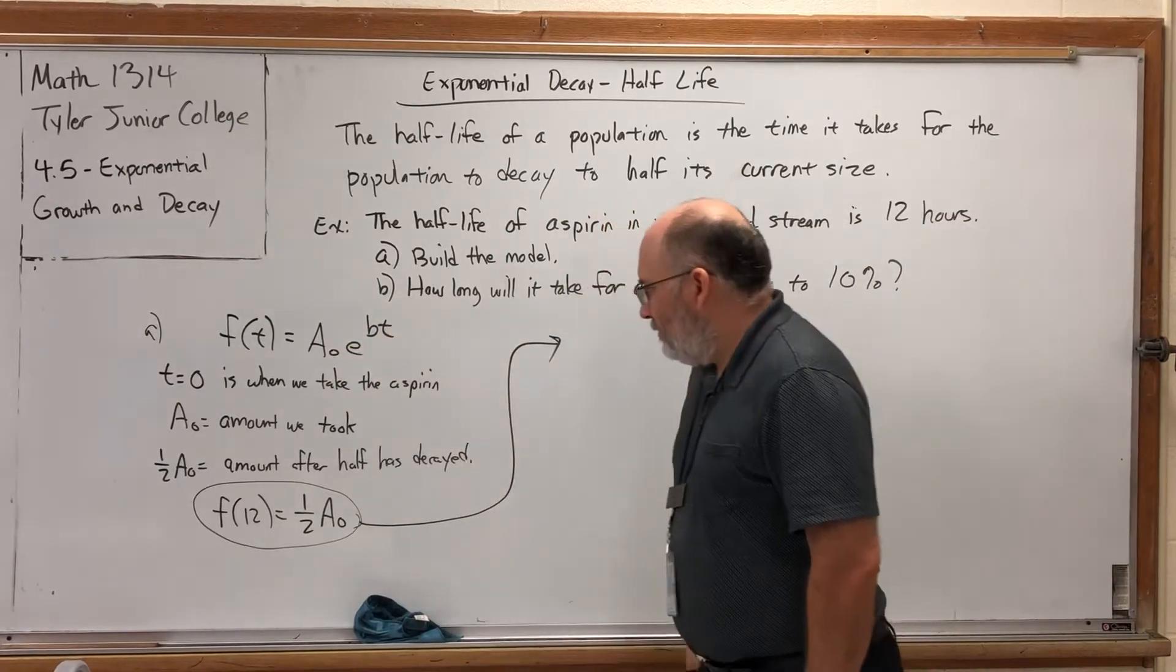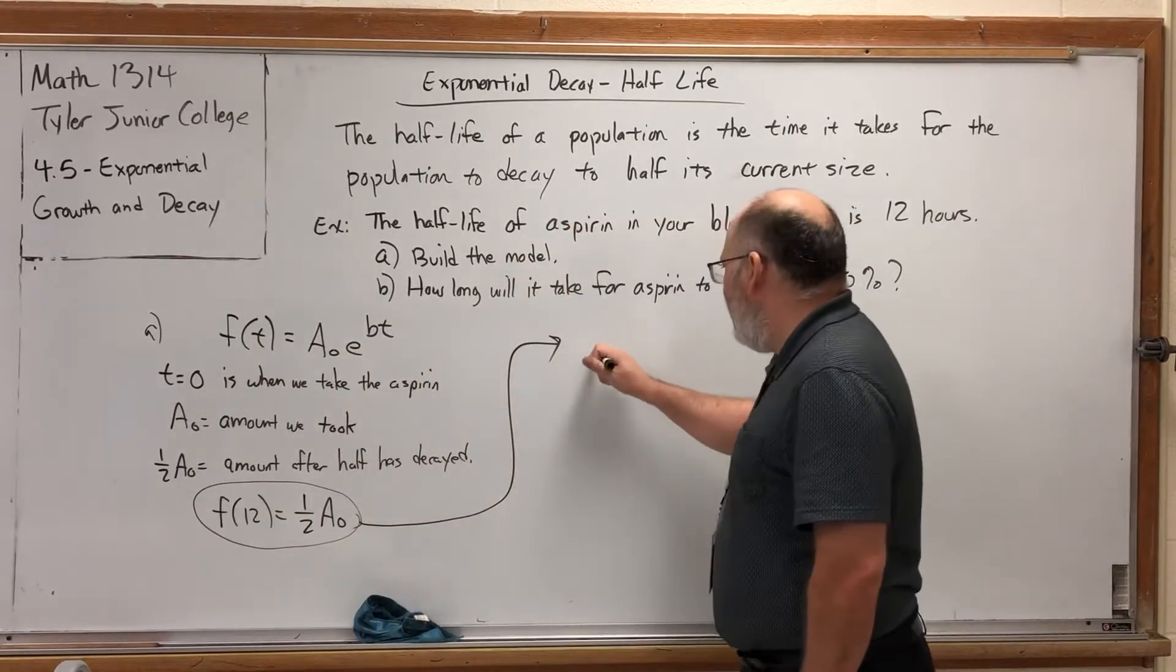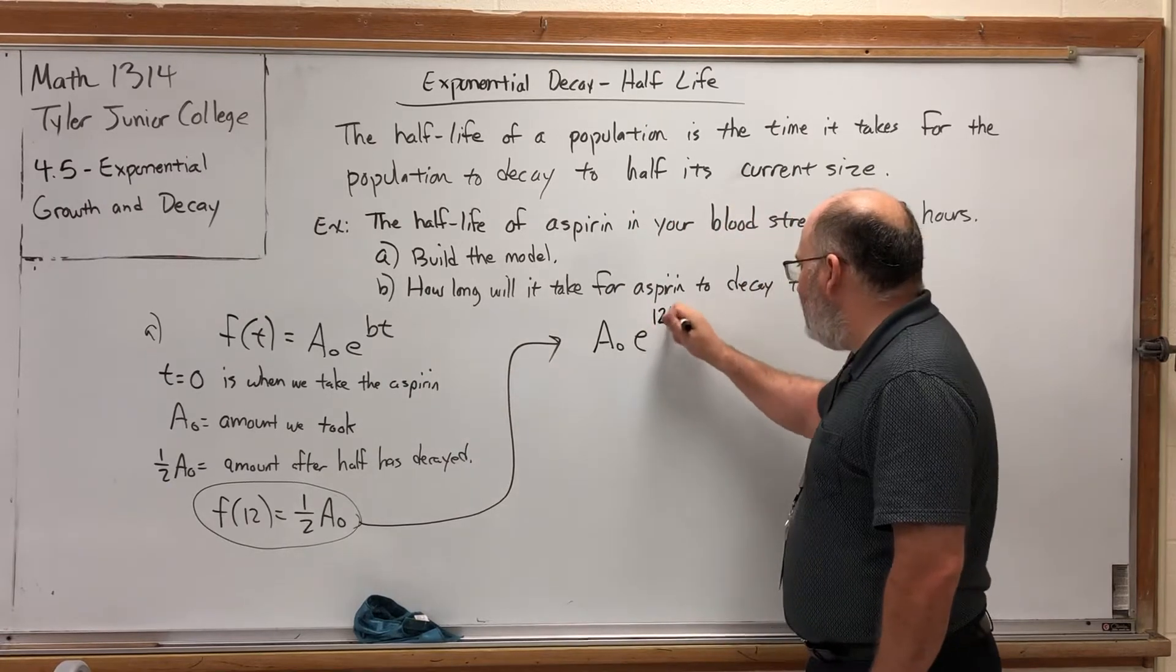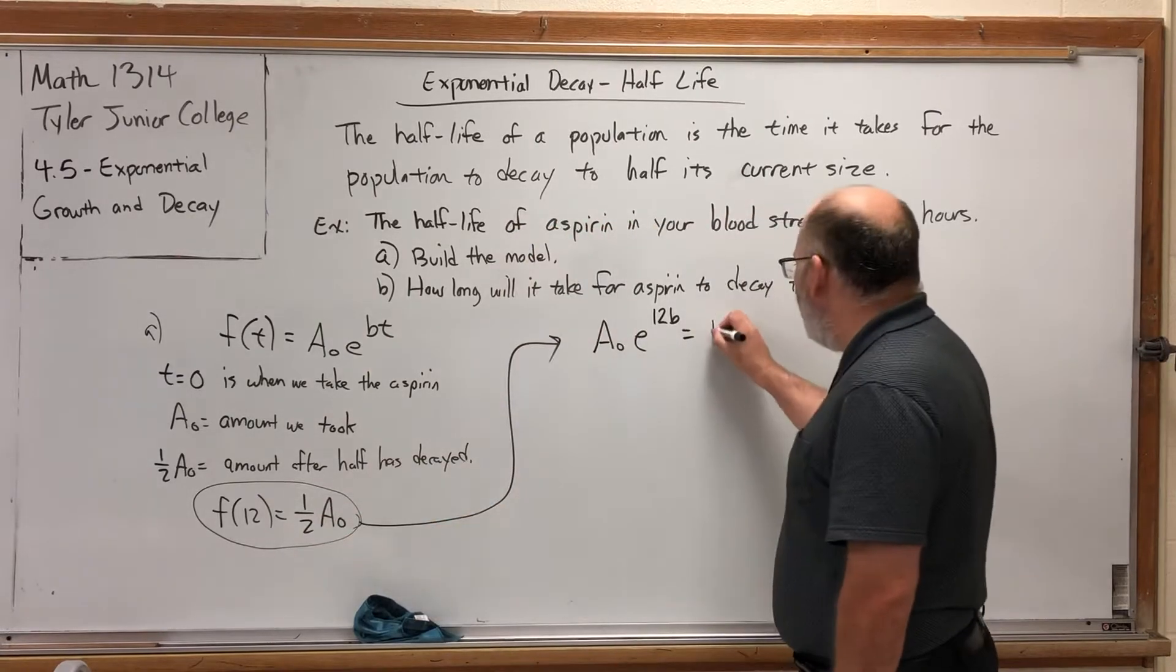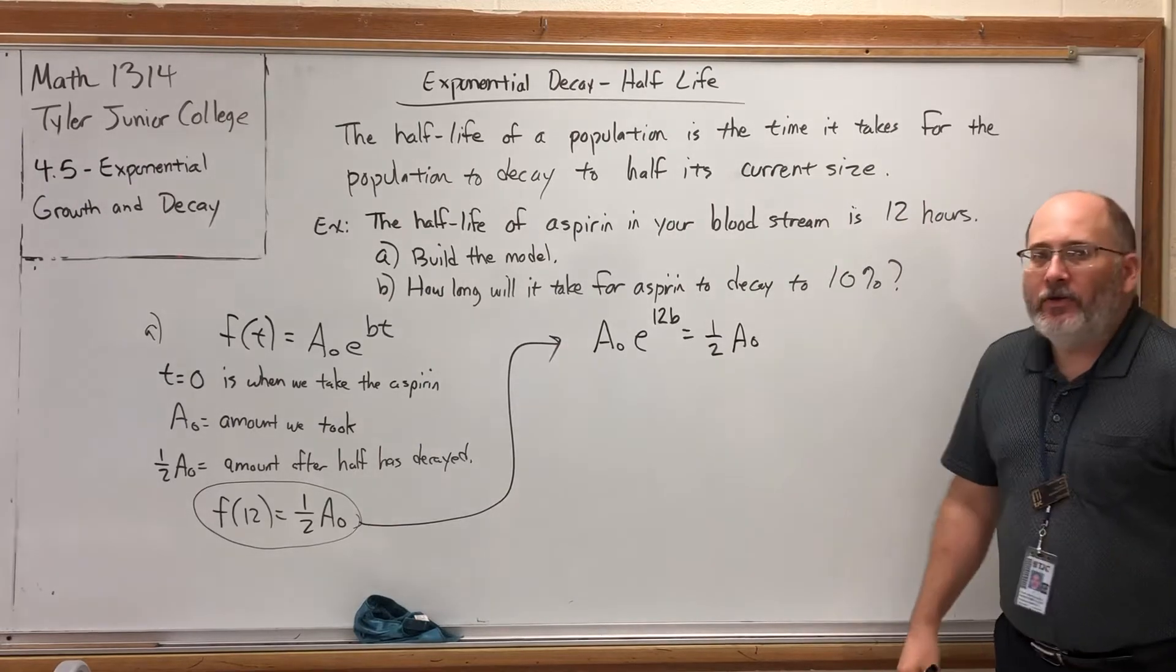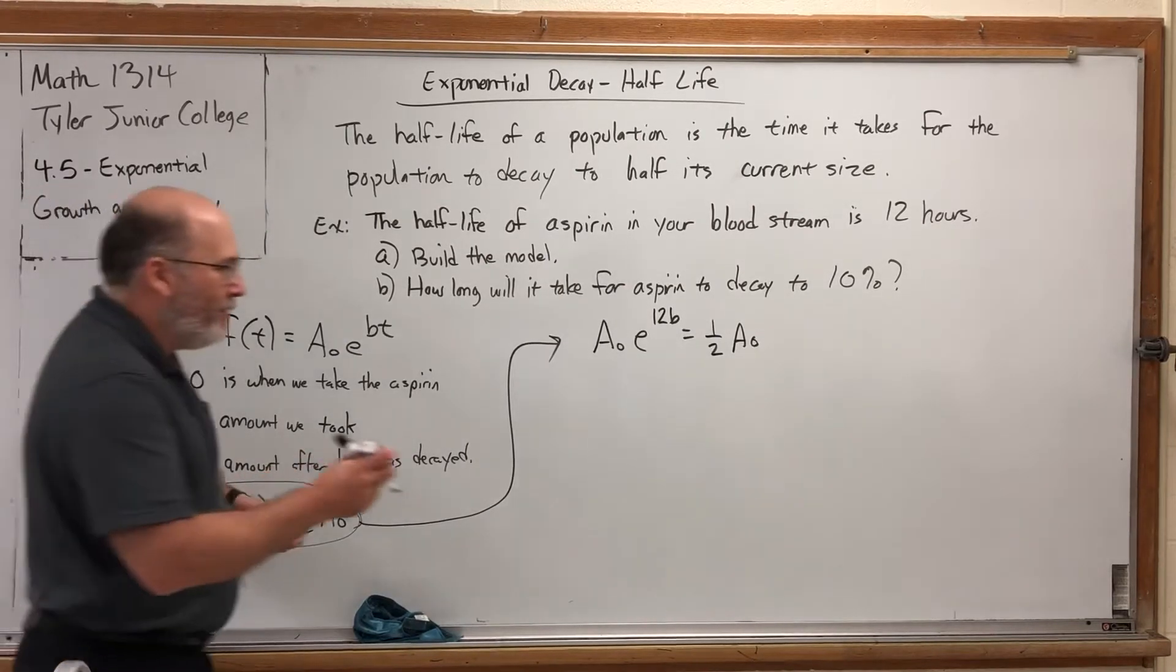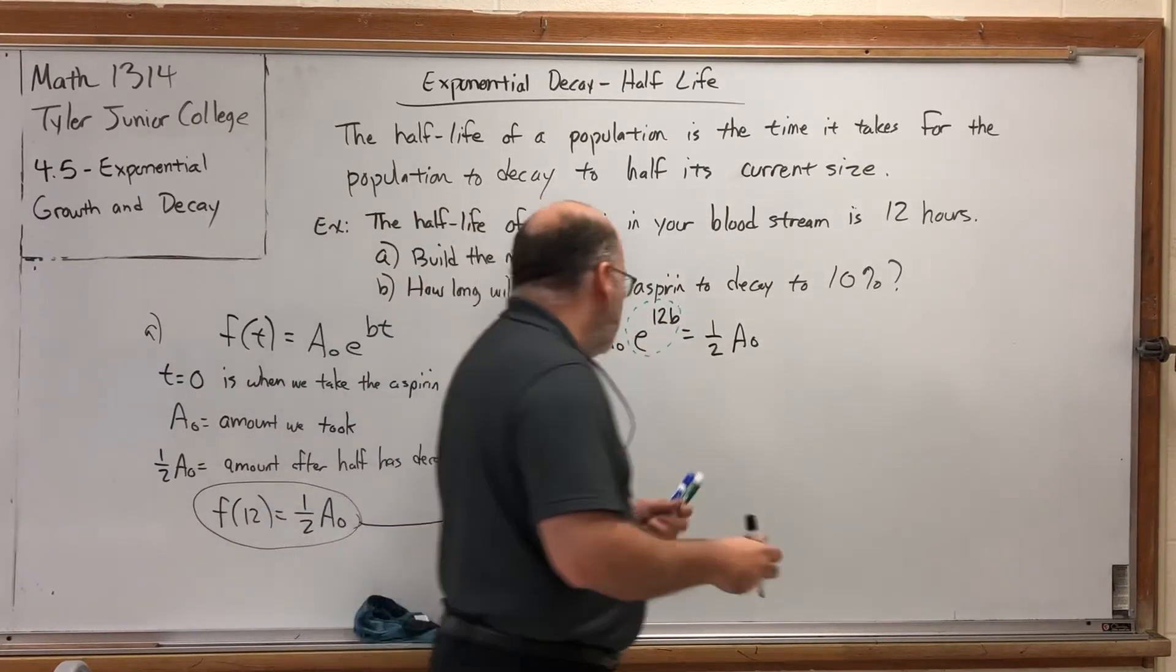I know what my function is supposed to look like. And I know what it looks like if I put in 12 for the t. If I put in 12 for the t, I'll get A₀e^(12b). That's what f(12) would look like, but it's supposed to equal half of what I started with. Do you see why it doesn't matter what we started with? If we start solving this exponential equation, our first move is to isolate the exponential term. Isolate the e^(12b) power.